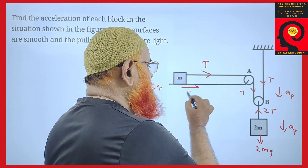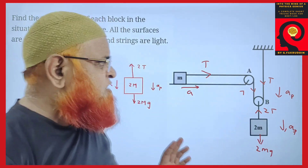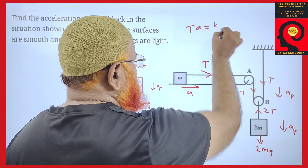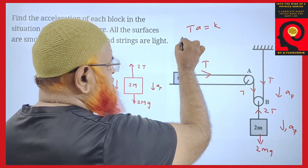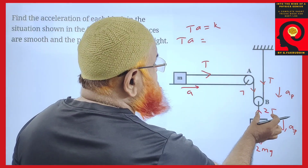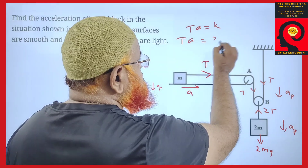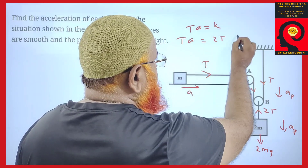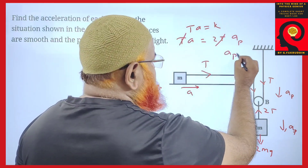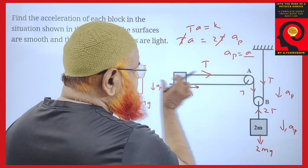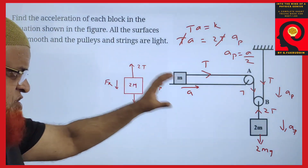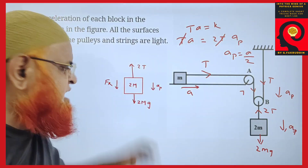To find the relation between acceleration of the block and acceleration of the pulley, we use the concept that tension times acceleration is constant. Therefore, T times acceleration of the block equals 2T times AP. T cancels, so acceleration of the pulley is acceleration of the block divided by 2.